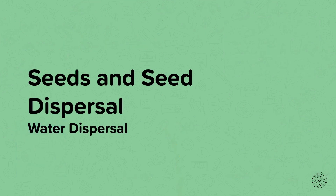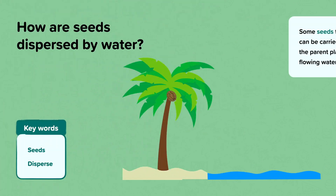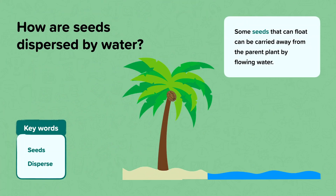Water dispersal. Some seeds that can float can be carried away from the parent plant by flowing water. The seeds of a palm tree are called coconuts. You may have eaten a coconut or drunk coconut milk. Coconuts can float on water, so after they fall from the tree, they can be carried away by flowing water. The coconut will then be washed up on the shore far away from its parent plant.